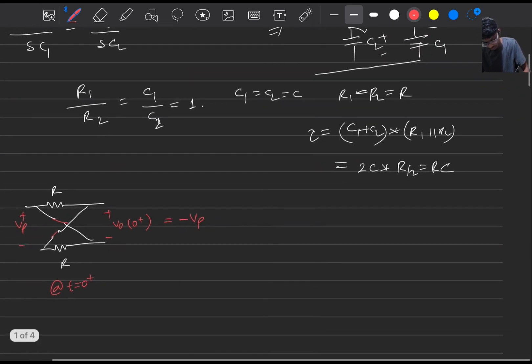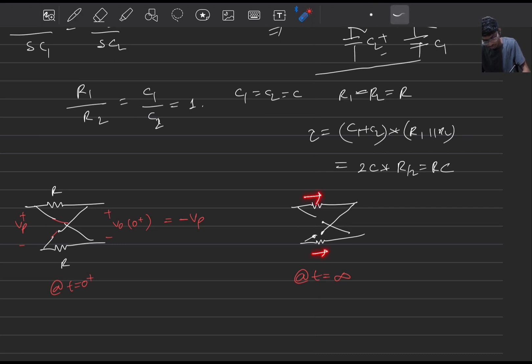Now at t equals infinity the circuit will look like something like this. As at steady state the caps will not carry any current as they will be open circuit and current through this and this will be also zero because this is an open unit output we are taking.